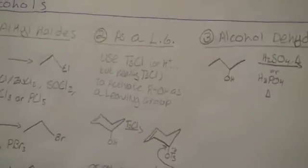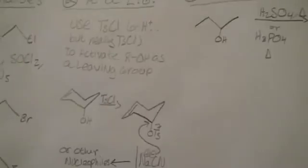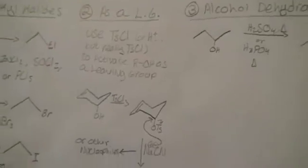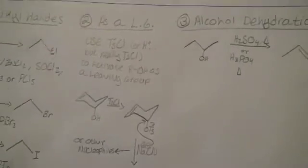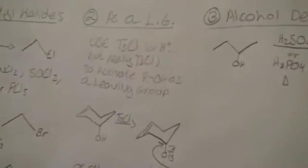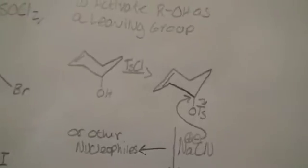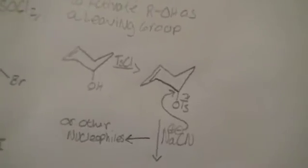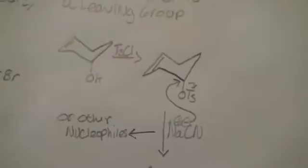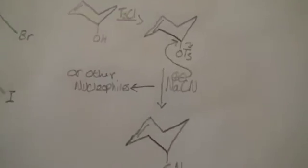Then we moved on to how to turn alcohol into a great leaving group. You're probably familiar with turning it into water, which is a good leaving group. But if you really need to bring out the big guns, you can use tosyl chloride or TSCl. It's a big sulfur-containing thing that I didn't draw up. But the moral of this story is it goes to OTS, which is a great leaving group. And then you can replace it with lots of other nucleophiles, like cyanide.